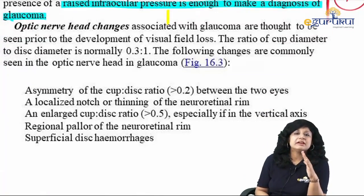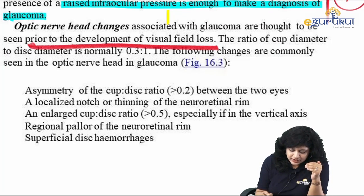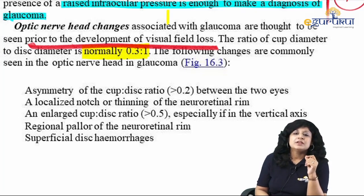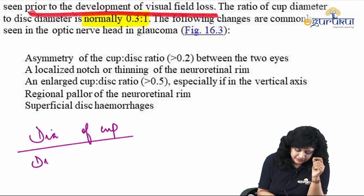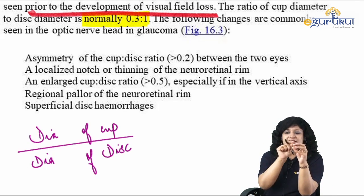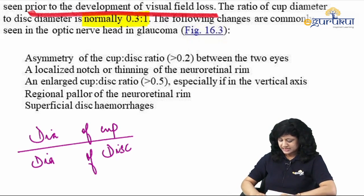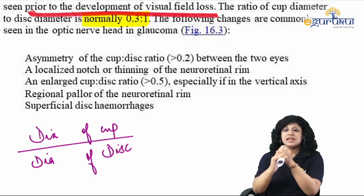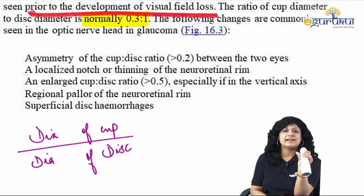Optic nerve head changes are seen prior to the development of visual field loss. The normal CD ratio is 0.3 to 1. CD ratio means the diameter of the cup upon the diameter of the disc. The cup is the hollow in the centre and the disc is the whole structure. Looking at the optic disc, this thick rim is the nerve fiber layer of the retina — we have 10 layers in the retina, and out of those, only the nerve fiber layer extends in the form of the optic disc and optic nerve.